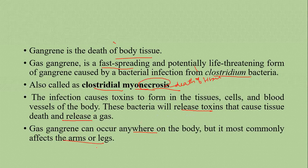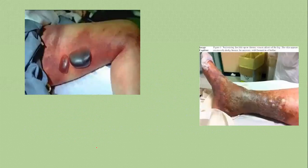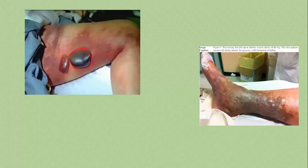Here is a picture of gas gangrene. You can see there will be some kind of blister-like skin changes visible on the thighs as well as on the foot.